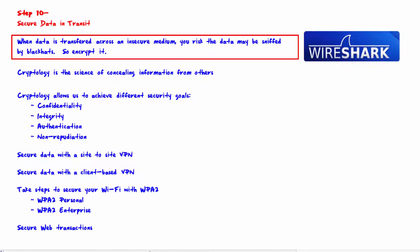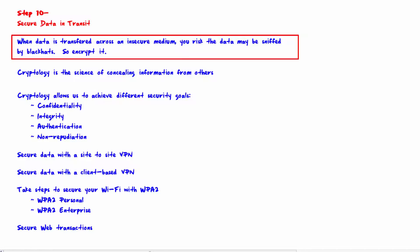They could use a program like Wireshark or many other utilities to capture that data so they can look at it. An insecure medium means the internet, or the air in the case of Wi-Fi.